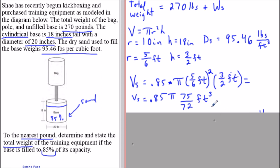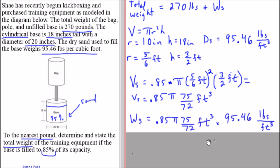To calculate the weight of the sand, we combine the volume of sand with the density of the sand by multiplying. We're going to multiply the volume of sand by 95.46 pounds per cubic feet.